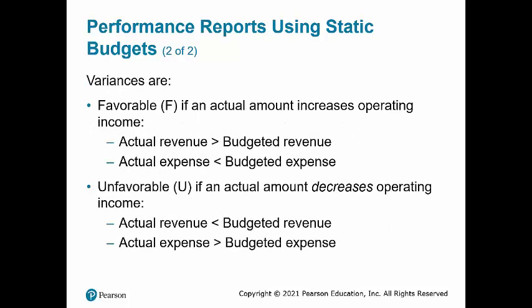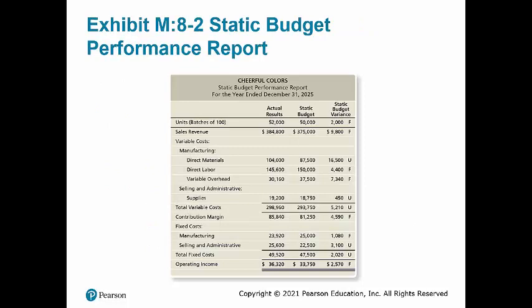Variances will be shown with an F as favorable if the actual amount increases operating income. This occurs when either actual revenue is greater than budgeted revenue, or when an actual expense is less than a budgeted expense. A variance is shown with a U if it is unfavorable and occurs when an actual amount decreases operating income — either when actual revenue is less than budgeted revenue or when an actual expense is greater than a budgeted expense. These are called static budget variances.